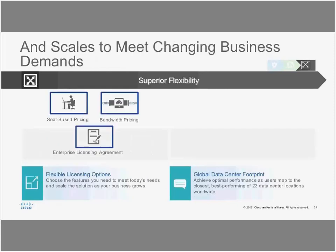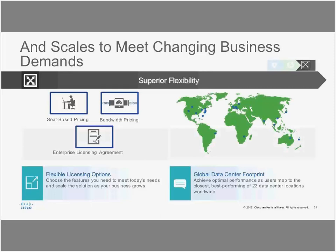For licensing, there are two basic options: Essentials and Premium. The Premium offering allows for the advanced threat capabilities — the ones that differentiate us from the competition. We also have seat-based pricing, bandwidth pricing especially in North America, and an ELA option which is an all-you-can-eat option — and cloud is great to include with that.